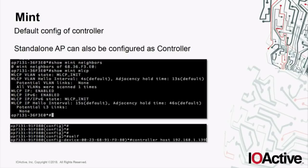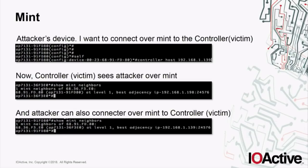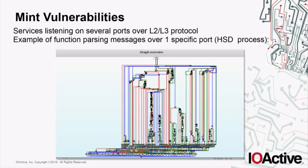To establish a MINT link, you set the controller host to the target's IP address, and then the MINT link is established. You can also connect an access point to the network and other access points can automatically detect it and establish the MINT link. After that, with the 'show mint neighbors' command you can confirm the link is established. Now we just need to find bugs in MINT services. There are many binaries and MINT services receiving data from sockets — this example from the HSD process shows a function receiving data from a specific MINT port, with switch case statements switching through operation codes.